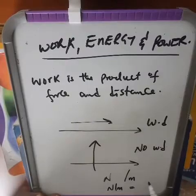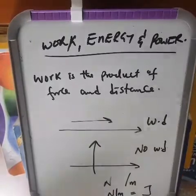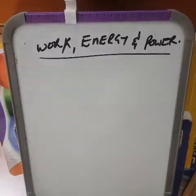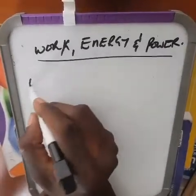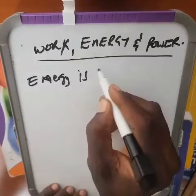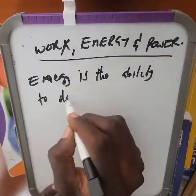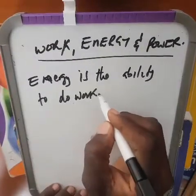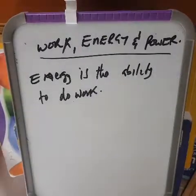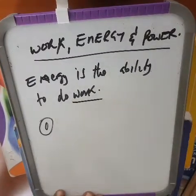A newton-meter is the same as a joule — you can write it as a joule, that's okay. So that's what we know about work. Now let's go to energy. Energy is the ability to do work.